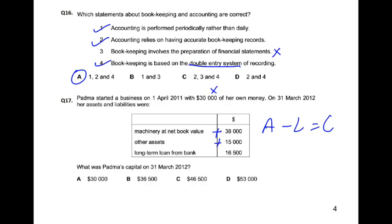Add 38 plus 15 — that gives us 53. Now subtract the long-term loan liability: 53,000 minus 16,500. The answer is 36,500. So that is the closing capital as per the balance sheet.